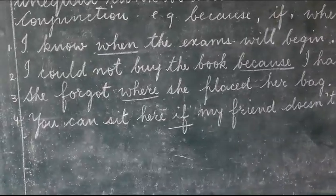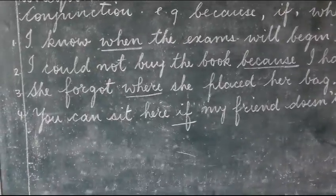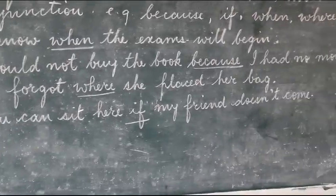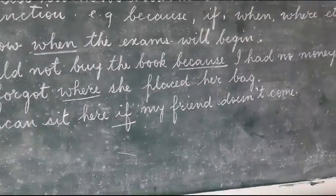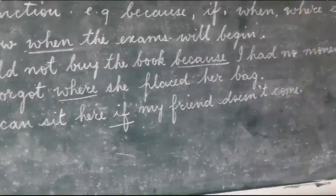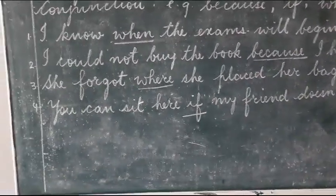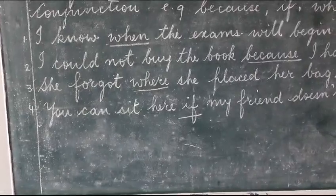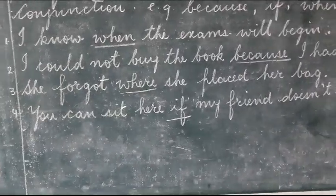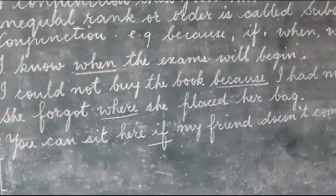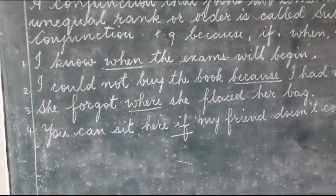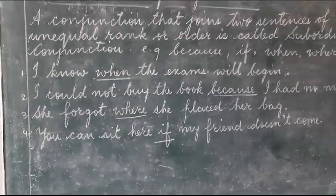You can sit here if my friend doesn't come. What is the condition that you can sit here? If my friend doesn't come. So these are the four example sentences.